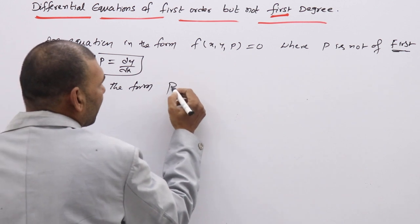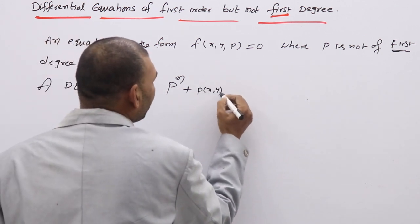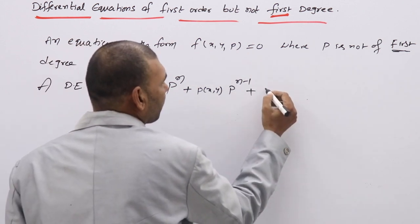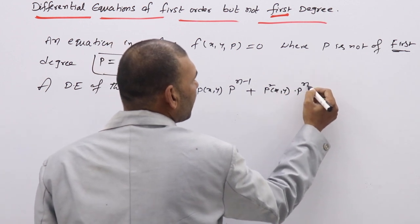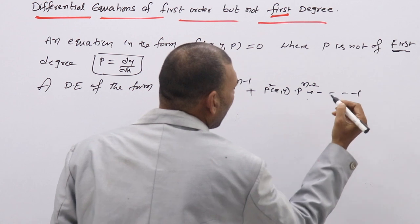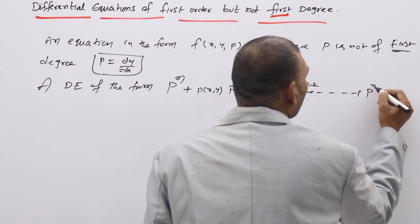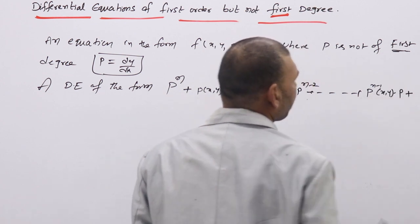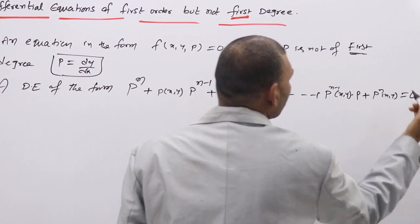A DE of the form: p^n + φ₁(x, y)·p^(n-1) + φ₂(x, y)·p^(n-2) + ... + φ_(n-1)(x, y)·p + φ_n(x, y) = 0. Here p means dy/dx.